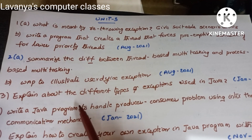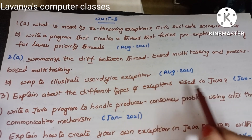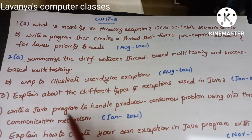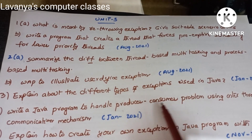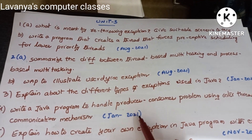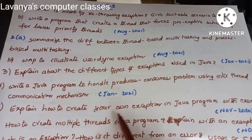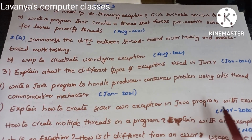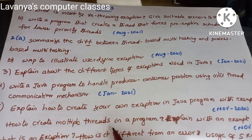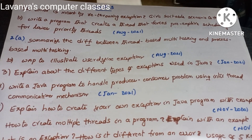'Explain the different types of exceptions used in Java' — January 2021. 'Write a Java program to handle the producer-consumer problem using inter-thread communication mechanism' — January 2021. 'Explain how to create your own exception in a Java program with example' — November 2020. 'How to create multiple threads in a program — explain with an example' — November 2020.